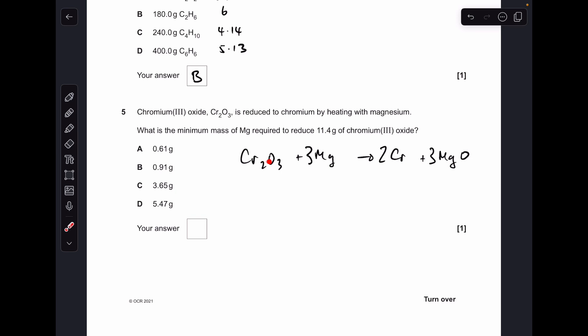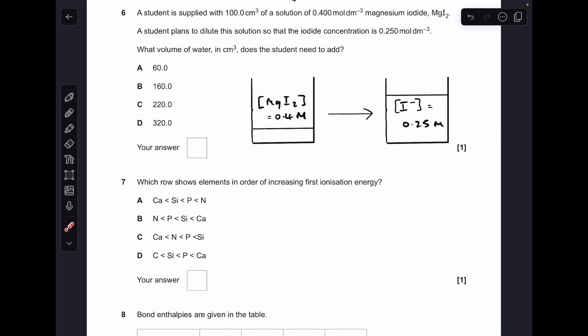Moving on to number five. The first thing we need to do is write the equation for the reaction between chromium III oxide and magnesium. Next thing I'm going to do is work out how many moles of chromium III oxide that is. That 11.4 grams, so that's just mass over Mr, so 0.075 moles of the chromium III oxide. So we're going to use the ratio now. Multiply by three to get the moles of magnesium, so that's 0.225. And then all we're going to do now is multiply by the Mr of magnesium, which is 24.3, and we get 5.47 grams. So it was D.